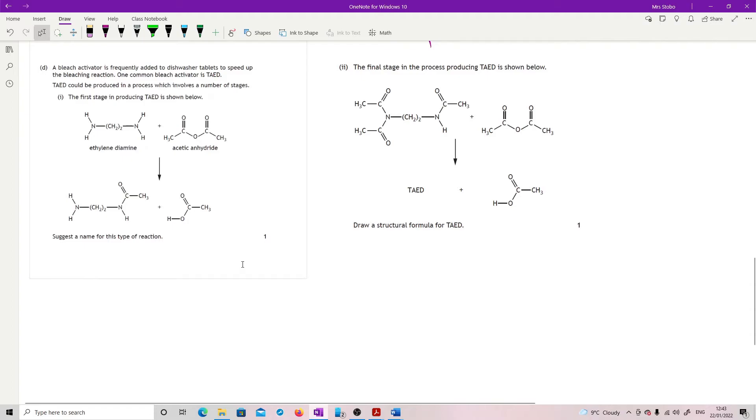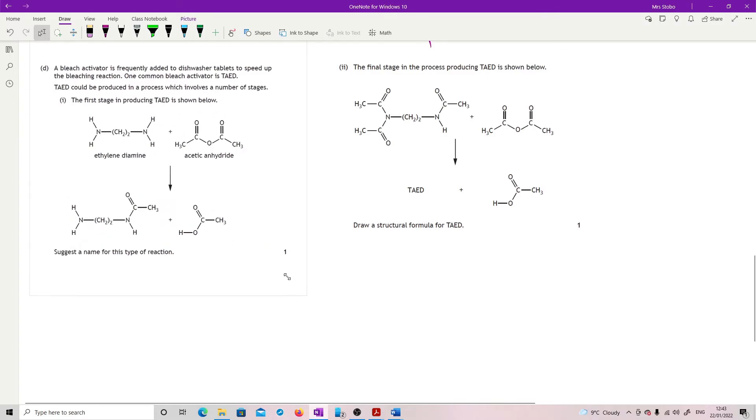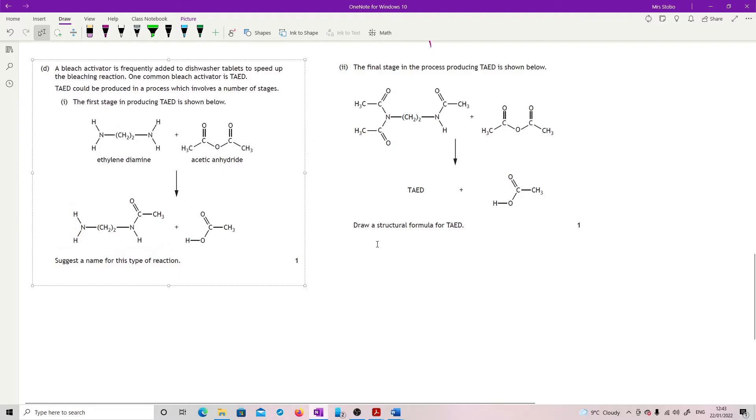A bleach activator is frequently added to dishwasher tablets to speed up the bleaching reaction. One common bleach activator is TAED. This can be produced in a process which involves a number of stages. First stage is shown below. Suggest a name for this type of reaction. Condensation. So we have taken two molecules, joined them together to make a bigger molecule, and you've got a little one that's been kicked out.